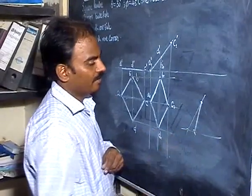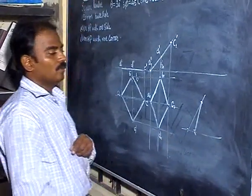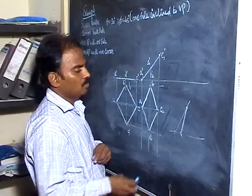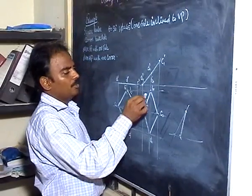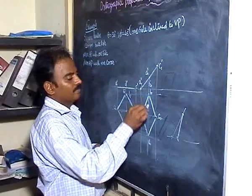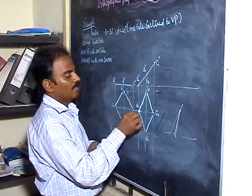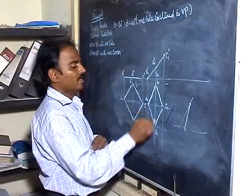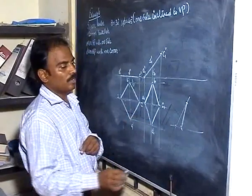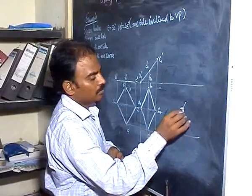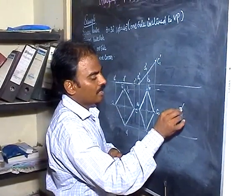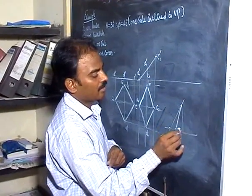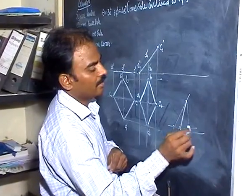So obviously you will be getting the shape like this. Now you can duplicate this particular object somewhere here so you will be able to get the final view. How will you duplicate this? You have some squares and some triangles here, so you do the same triangle somewhere here.